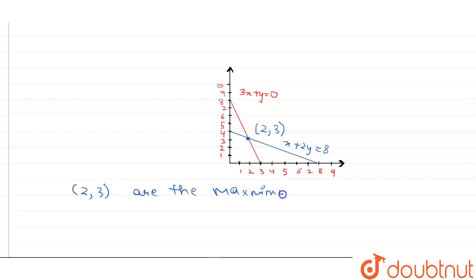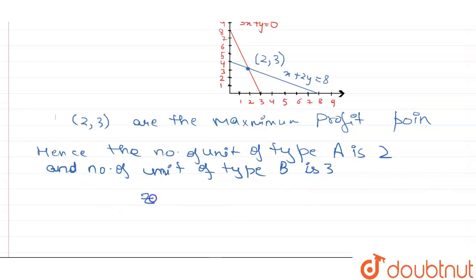Hence the solution is: the number of units of type A is 2 and the number of units of type B is 3. So from here we got Z equal to 230 rupees. This is our final solution at point (2,3) which is their meeting point.